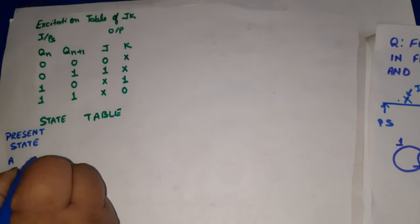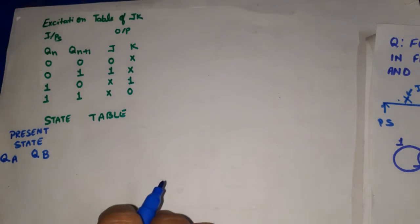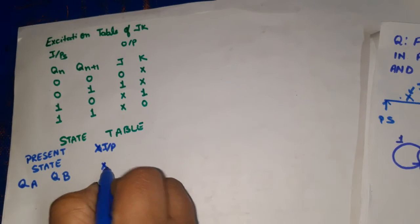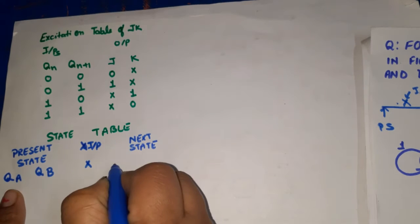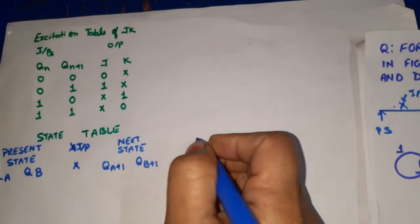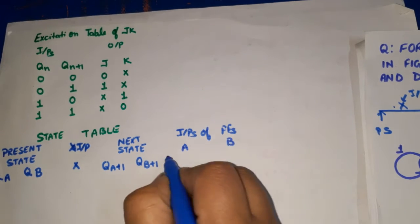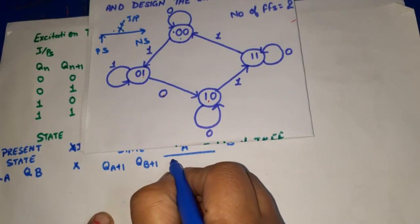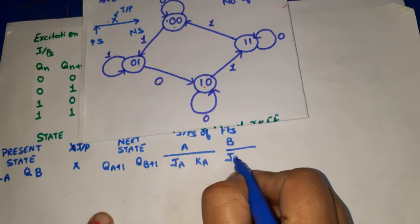We have two flip-flops: flip-flop A and flip-flop B. The output of flip-flop A is QA and the output of flip-flop B is QB — these are the present states. The tail of the arrow shows the present state and the head of the arrow shows the next state. The value on the arrow is the input, assigned to variable X. For next state we have QA+1 and QB+1. For the flip-flop inputs, flip-flop A uses JA and KA, and flip-flop B uses JB and KB.